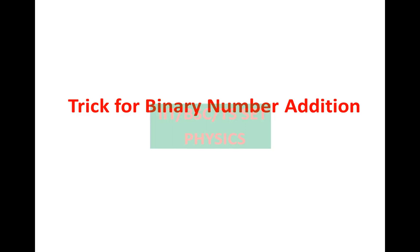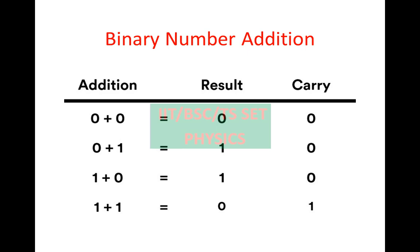This is the trick for binary number addition. Normally binary number addition uses the regular method with 0 and 1. First of all, the different cases: 0 plus 0, result is 0.